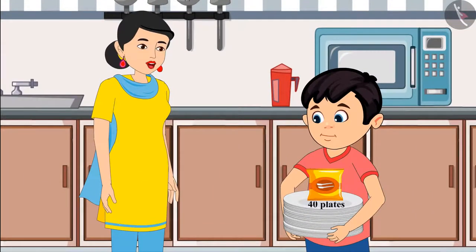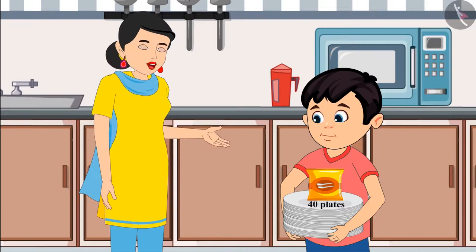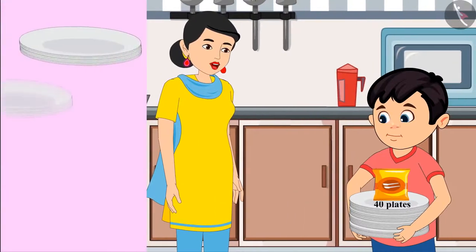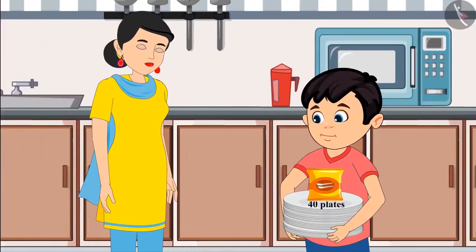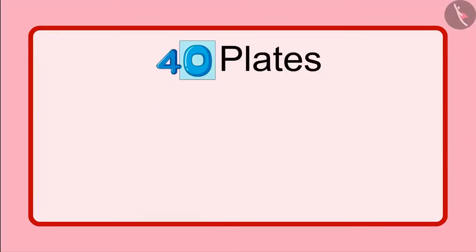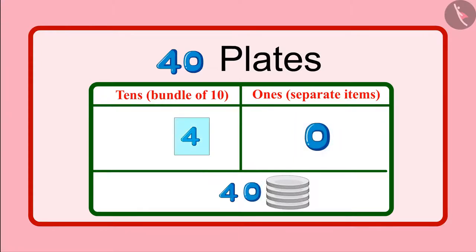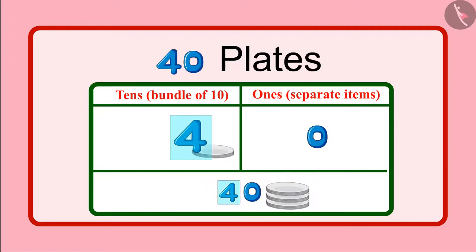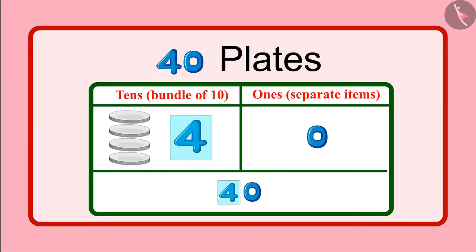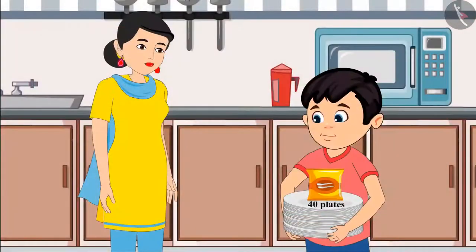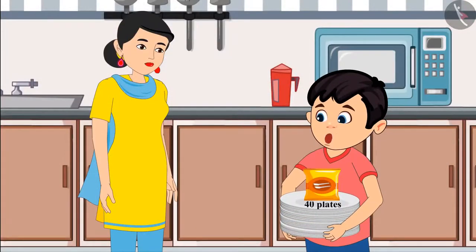His mother corrected him: 'No, no, Chotu. You are reading it wrong. It's written here 40 plates, which is 4 groups of 10 plates.' Chotu asked about the 0 written there. His mother explained: 'Chotu, here 0 is written in place of units, which means not a single open plate. And the 4 means 4 groups of 10 plates, meaning 40 plates in total.' Chotu understood.